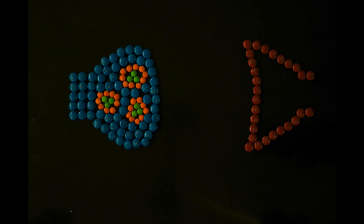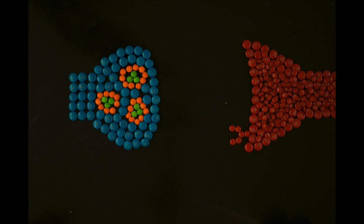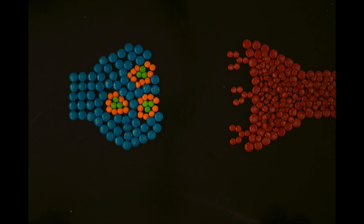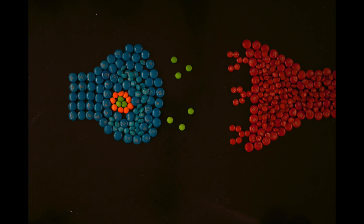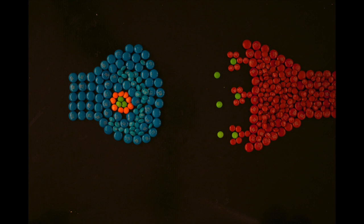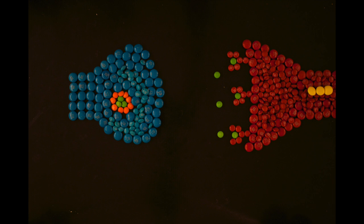The electrical impulse causes vesicles, which contain the neurotransmitters, to fuse with the axon terminal membrane. Then they release the chemicals into the synaptic cleft through exocytosis. The neurotransmitters bind to receptors, usually in dendrites, but they can also bind to axons or the cell body of the postsynaptic neuron. The binding of the neurotransmitters will either stimulate or prevent another action potential in the next neuron.